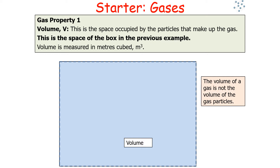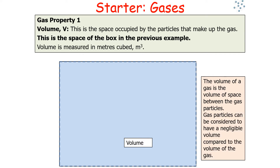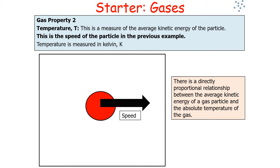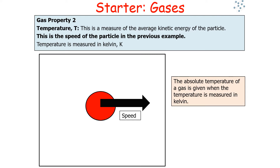It's important to note that the volume of a gas is not the volume of the individual gas particles. Rather, it's the volume of space between the gas particles. Gas particles can be considered to have a negligible volume compared to the volume of the actual gas itself. The second property of a gas is the temperature, which is the measure of the average kinetic energy of the particles in the gas. We measure temperature in Kelvin, and there's a directly proportional relationship between the average kinetic energy of a gas particle and the absolute temperature of the gas.